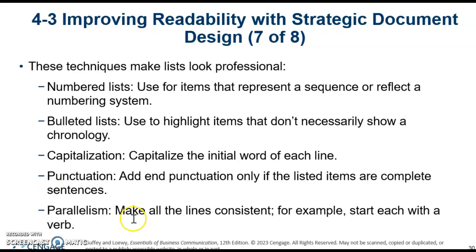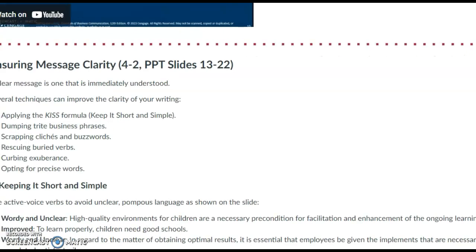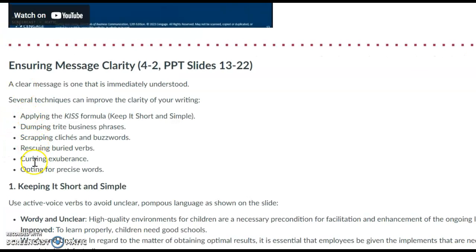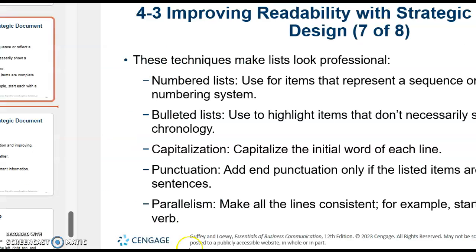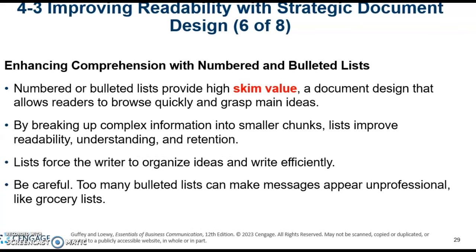When doing bullet lists, you also want to make your lines consistent — that is, parallel in structure. If you start the first bullet with a verb, you should start the second one with a verb as well. In my example, you can see these are parallel — they're all starting with a verb. That's something I'll be looking for: make sure your bulleted lists are parallel.